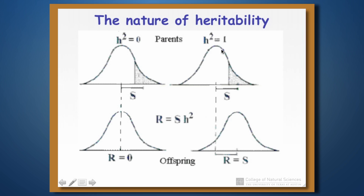On the other hand, here's a case where heritability is close to one. The selection differential and the response to selection are equal to each other. After selection and reproduction, the new population has the same mean as the survivors had after selection. So in that case, the heritability is essentially perfect — equal to one.